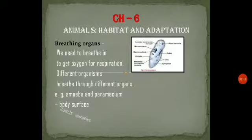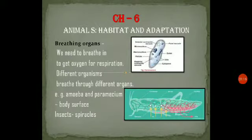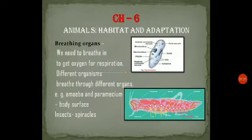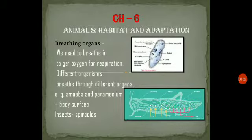Next we will talk about insects. Insects have spiracles. Spiracles means tiny holes. Oxygen goes in and carbon dioxide comes out of these holes — and they are called spiracles.